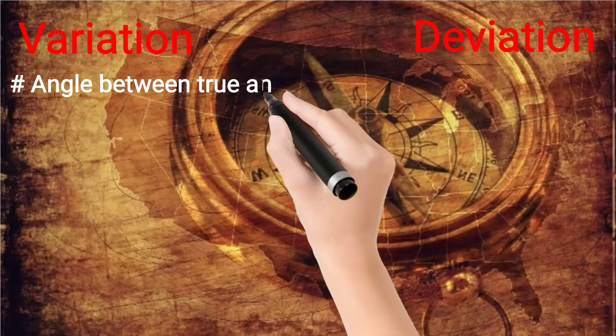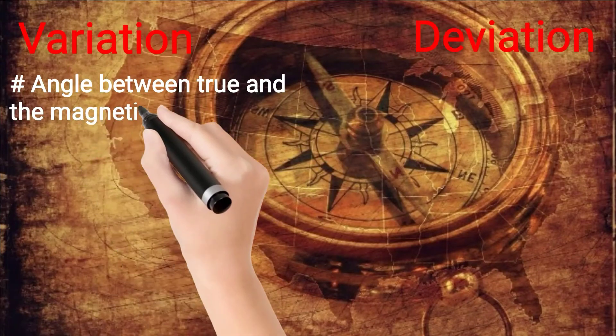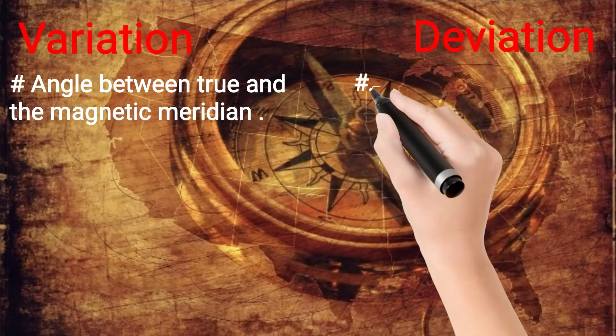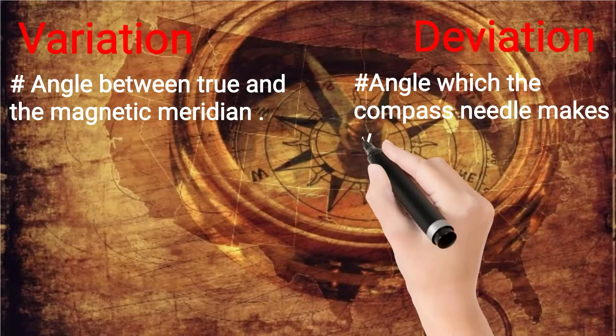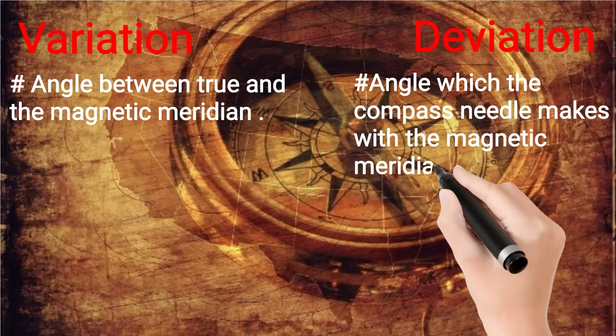Variation is the angle between the true and the magnetic meridian, whereas deviation is the angle which the compass needle makes with the magnetic meridian.